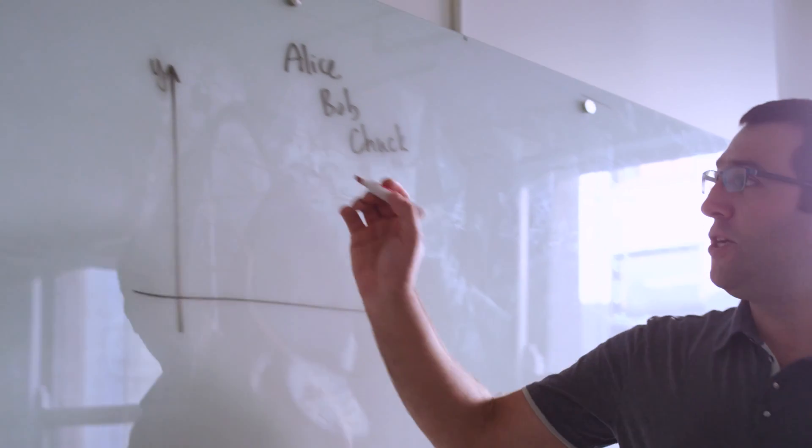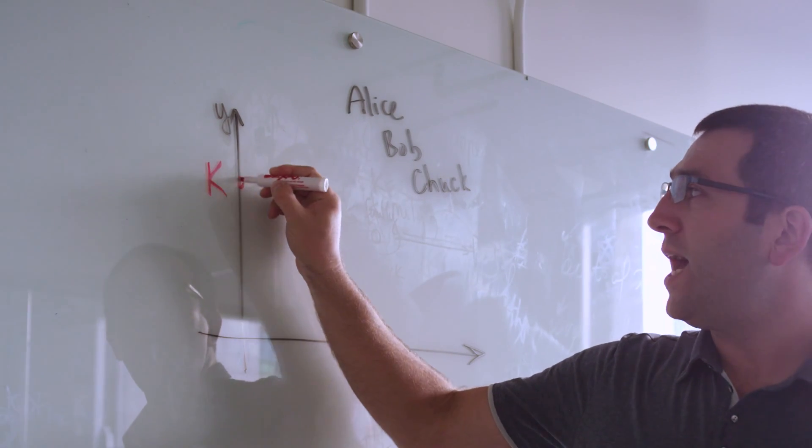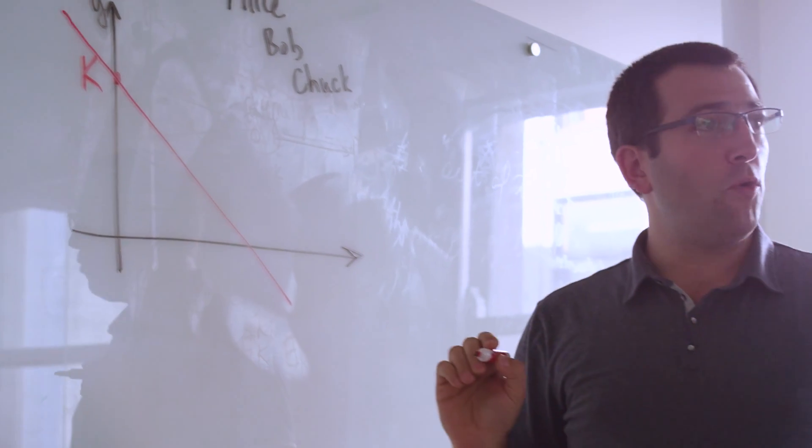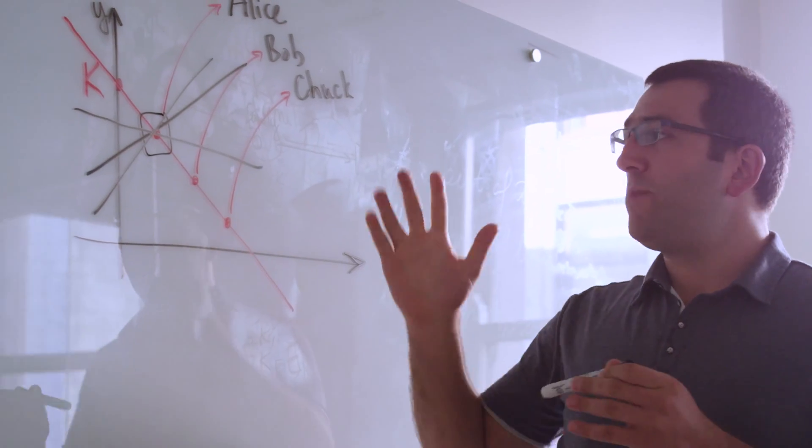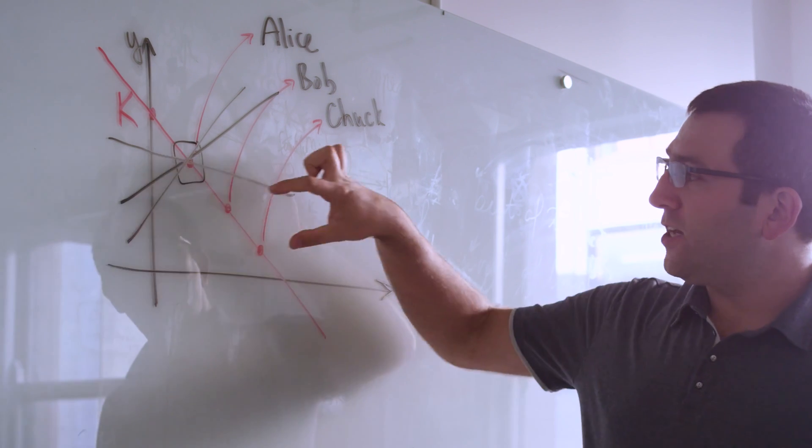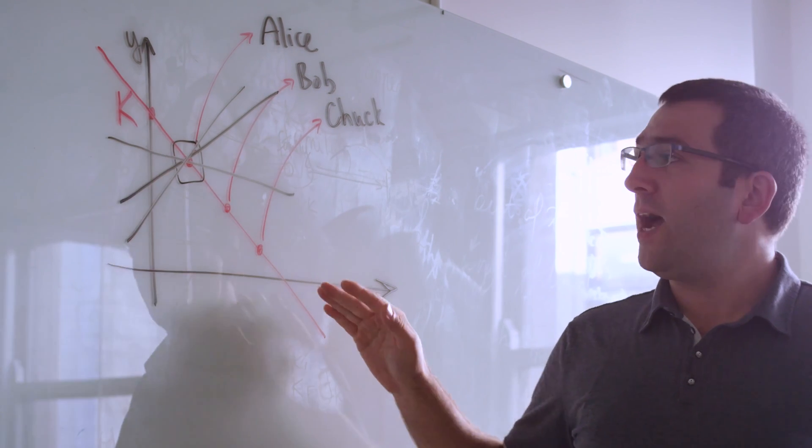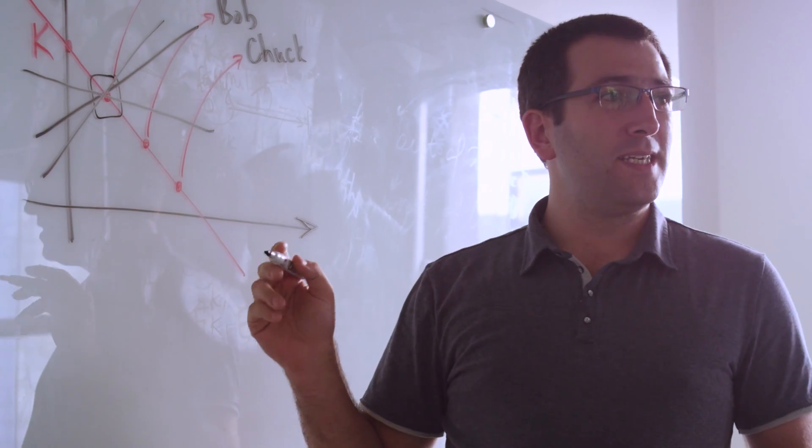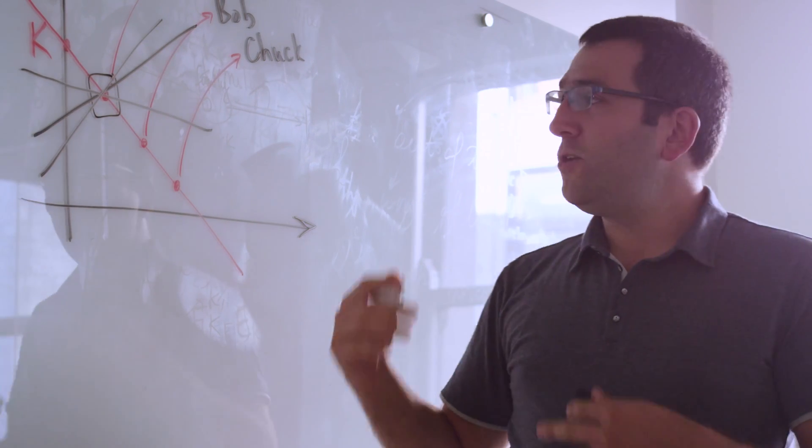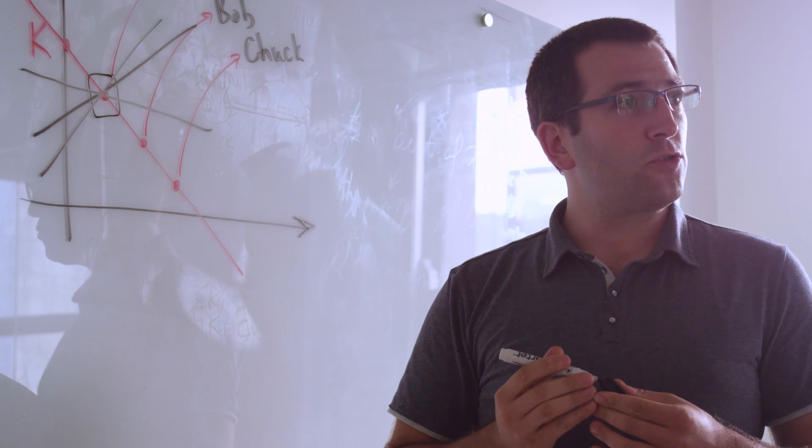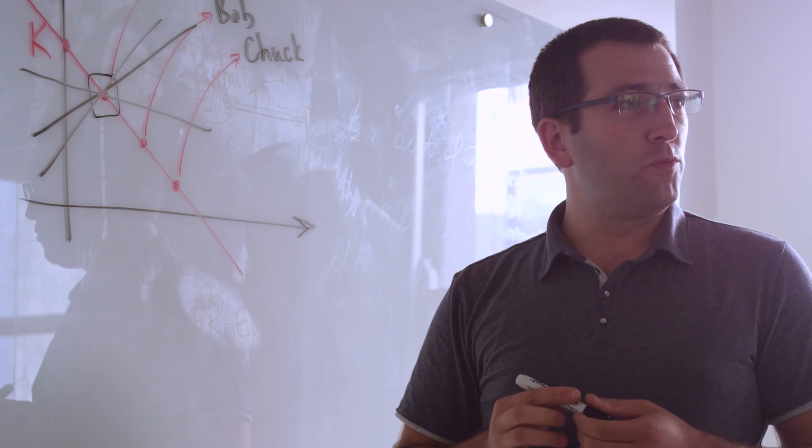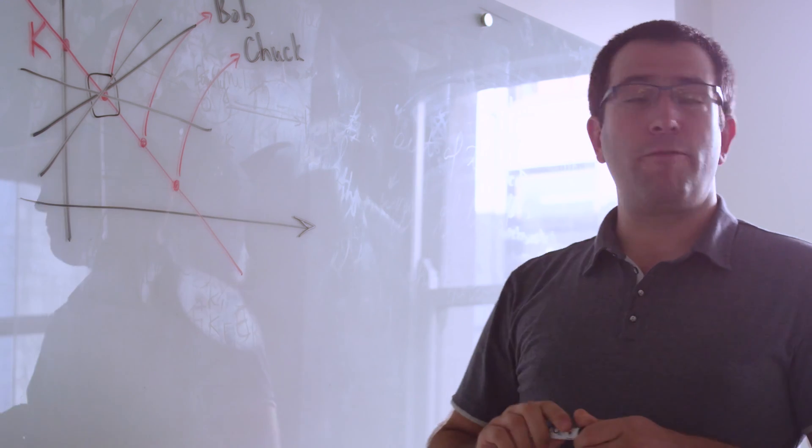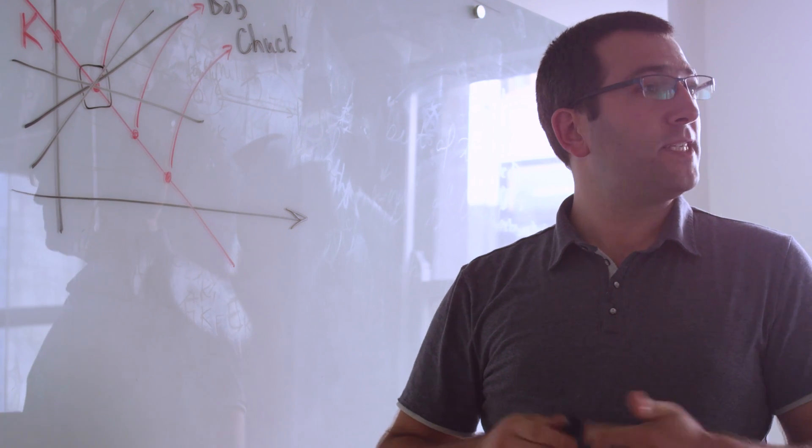By placing my secret key on the y-axis, I'm going to pick a random line going through that key point. If any two of my friends get together, they can take their two points, draw a line through them, and wherever that line meets the y-axis indicates to them what my key is. So by using this Shamir secret sharing construction, Prevail's approval groups allow any quorum of my friends to reconstruct my key in case I lose it.